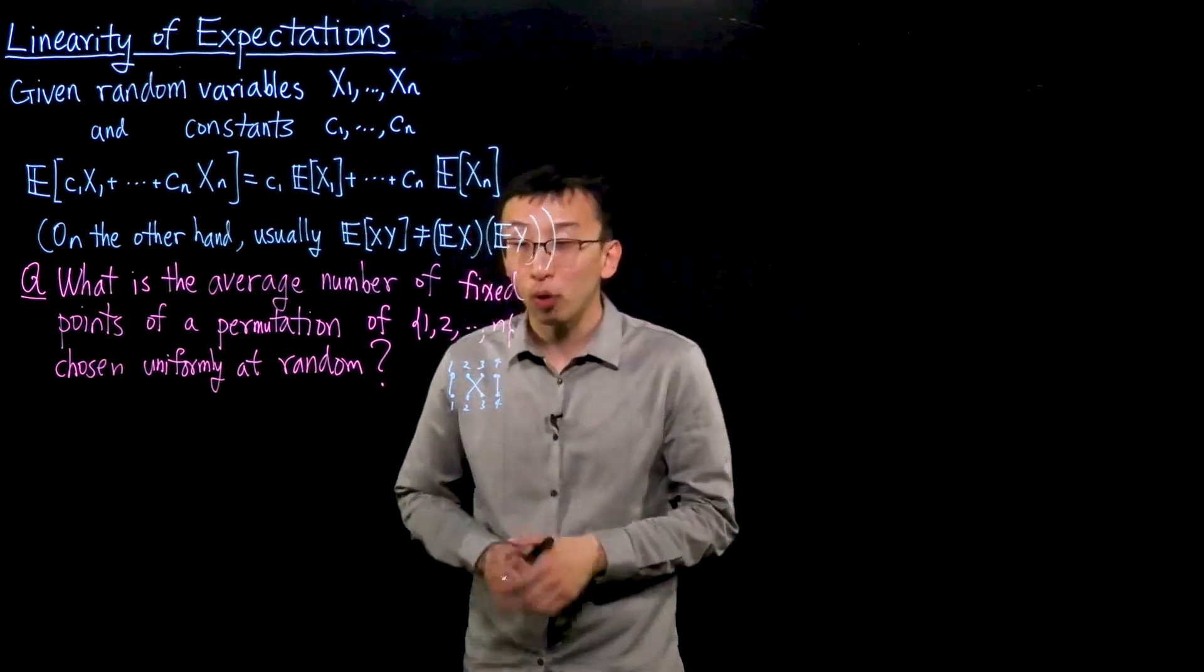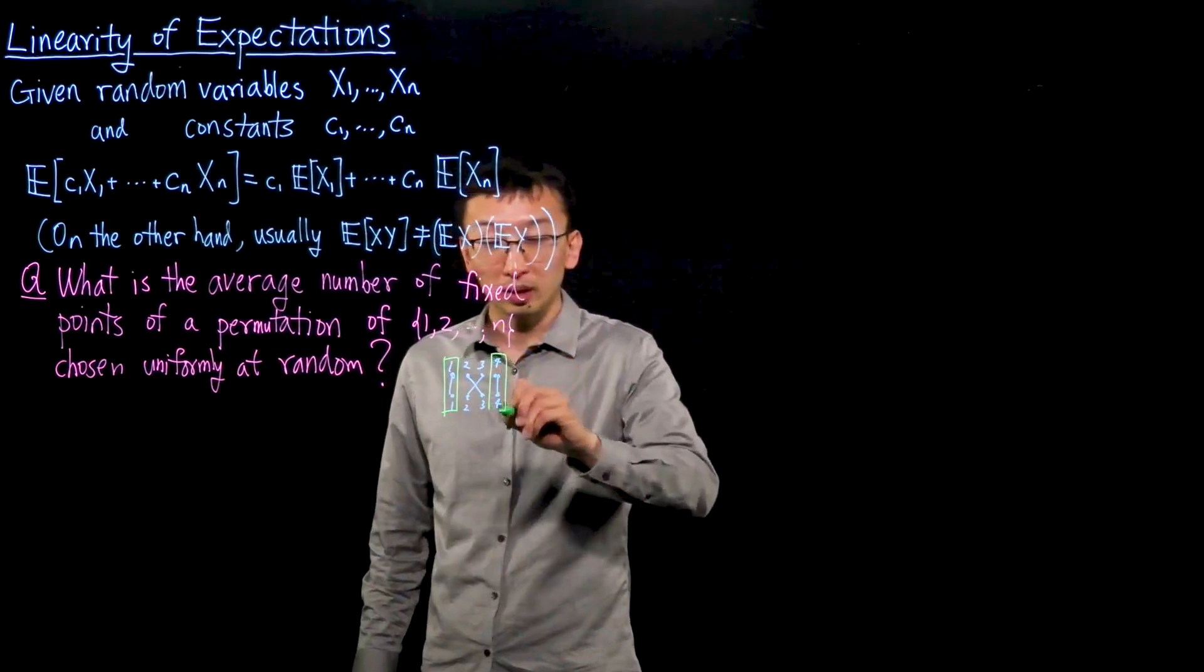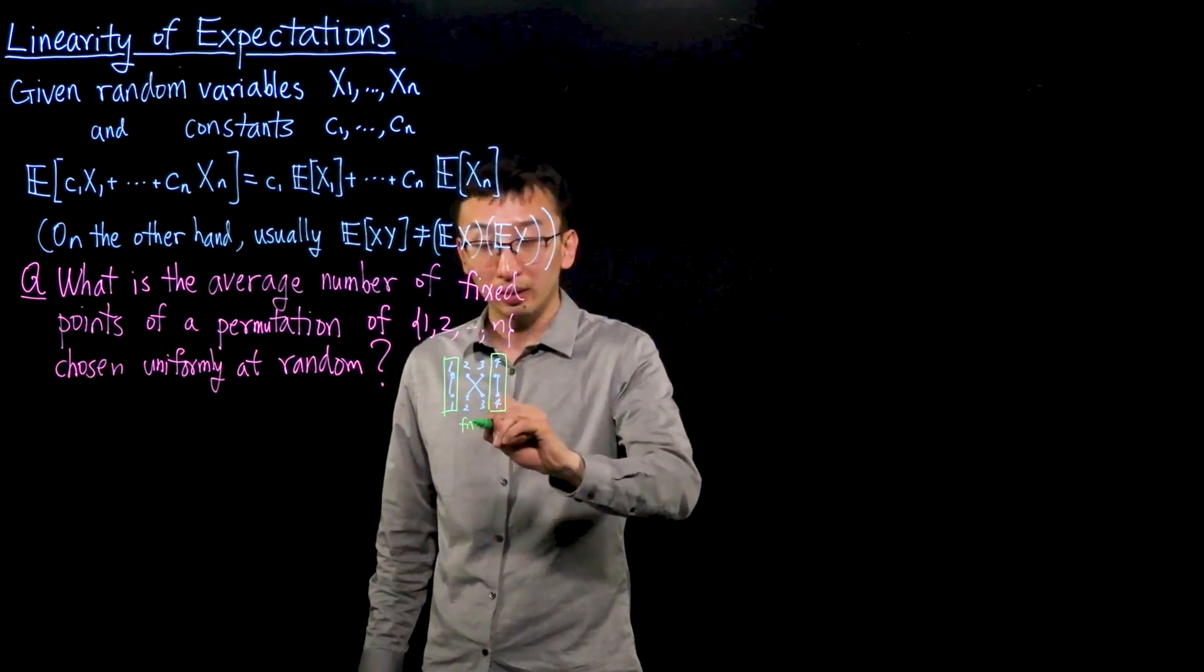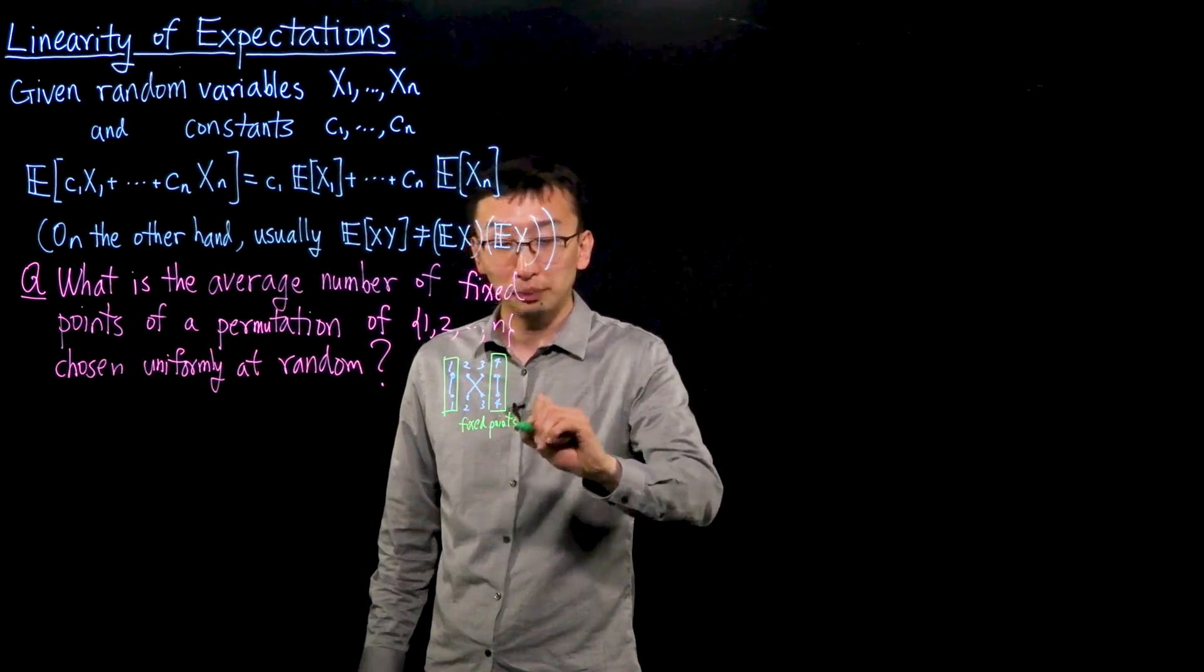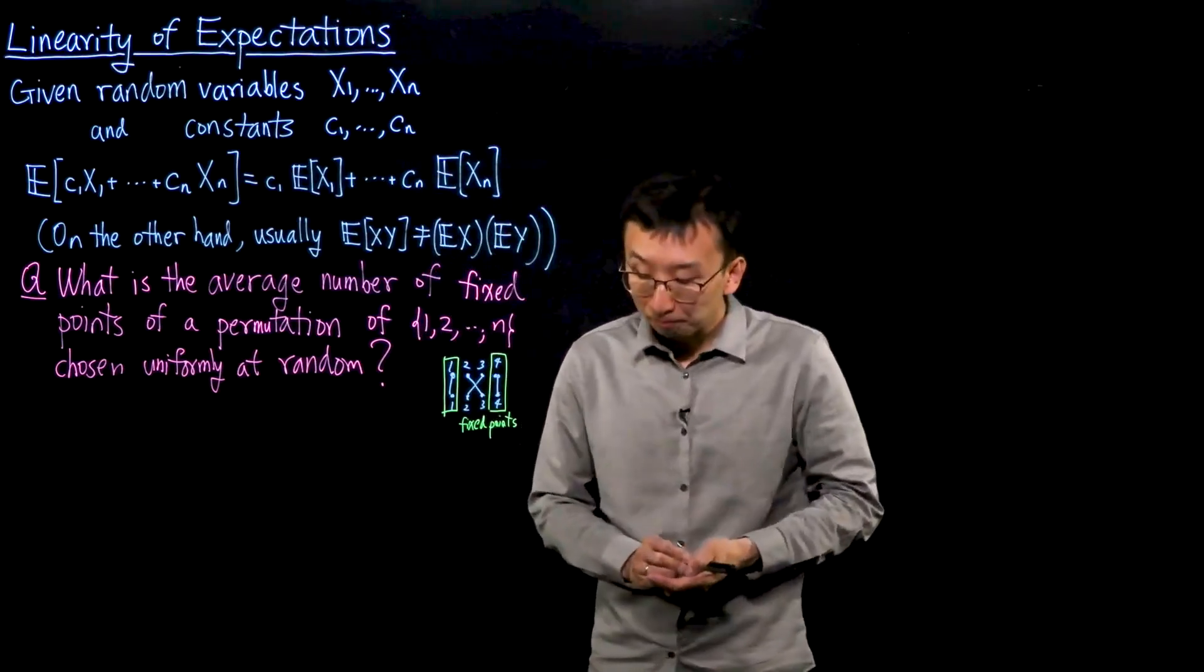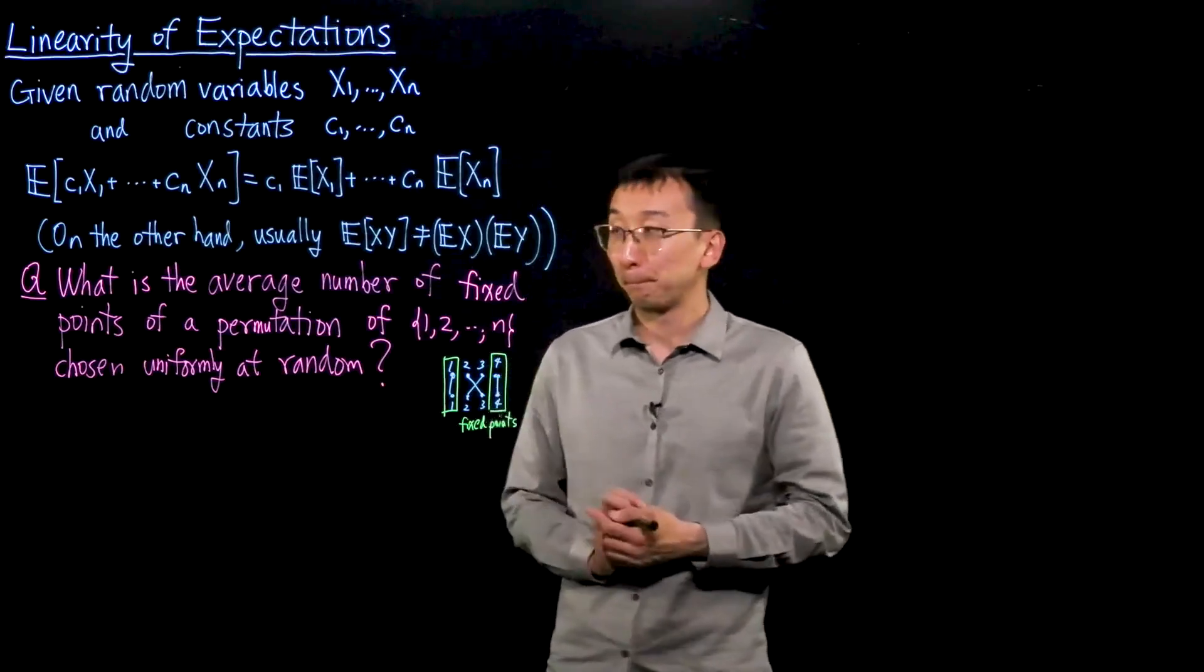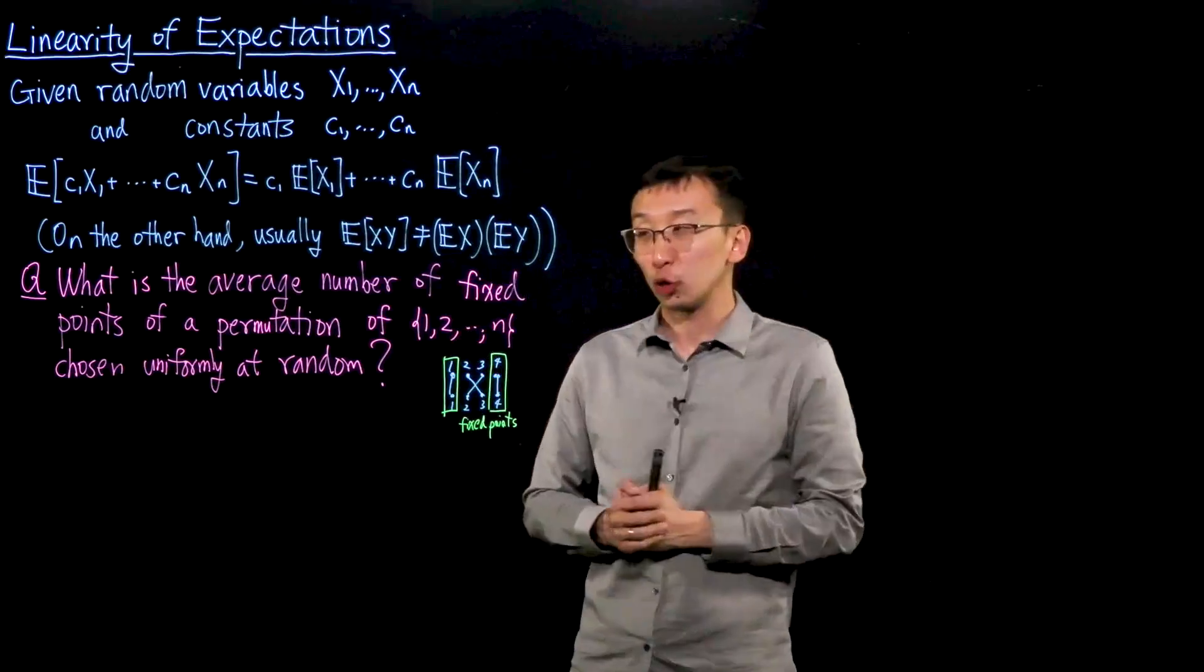And a fixed point is some number that gets mapped back to itself. So in this permutation, there are exactly two fixed points.